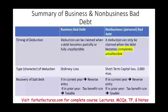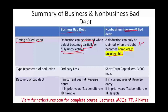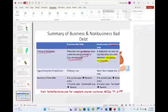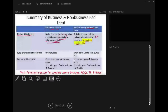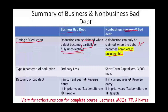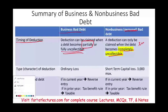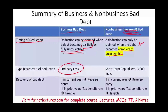Here's a summary of business versus non-business bad debt. For business bad debt, the deduction can be claimed when the debt becomes partially or fully uncollectible. For personal debt, the loan must be completely uncollectible before you can claim the deduction. Regarding the character of the deduction: business bad debt is an ordinary loss — deductible against ordinary income, which is favorable. Personal bad debt is a short-term capital loss, capped at three thousand dollars.